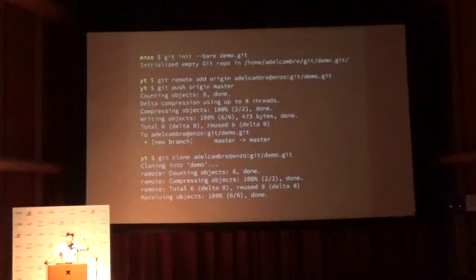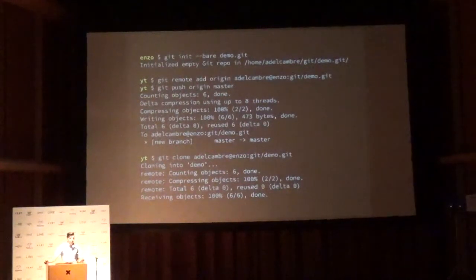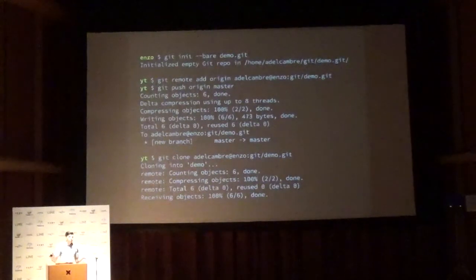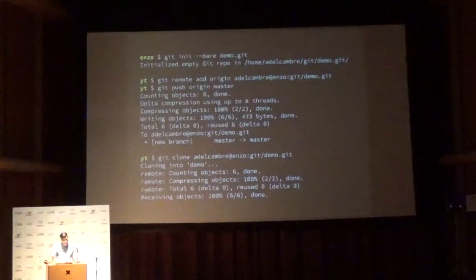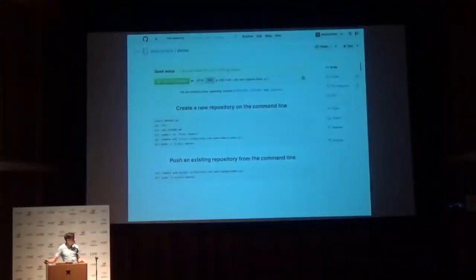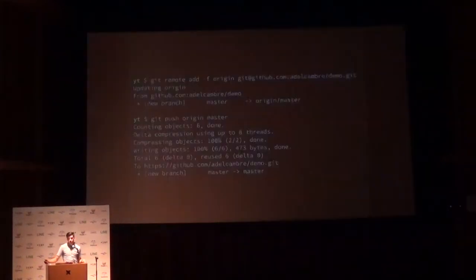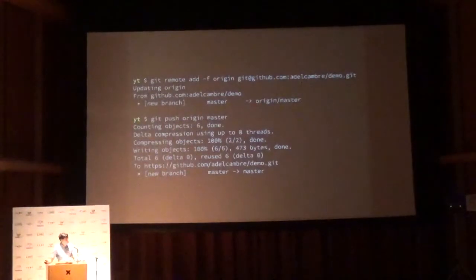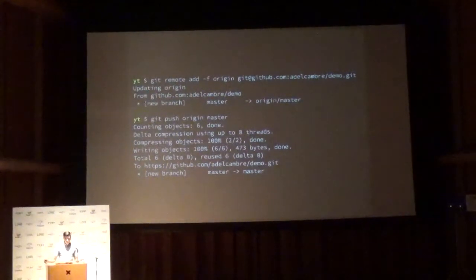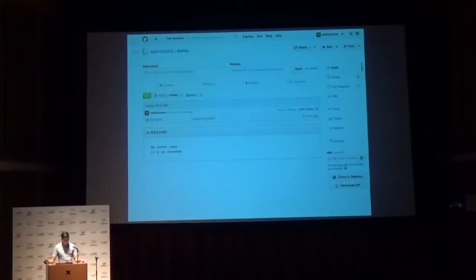If you create a repo on the server and add it as a remote, anything you have SSH access to you can pull from and push to. Every entire repo is exactly the same — every one is fully blessed; there are no special repositories in Git. So if you want to do this on GitHub, you create a new repository, add it as a remote, push to it and pull from it, just like you could with your own server. At its most basic level, GitHub is really just a Git host.